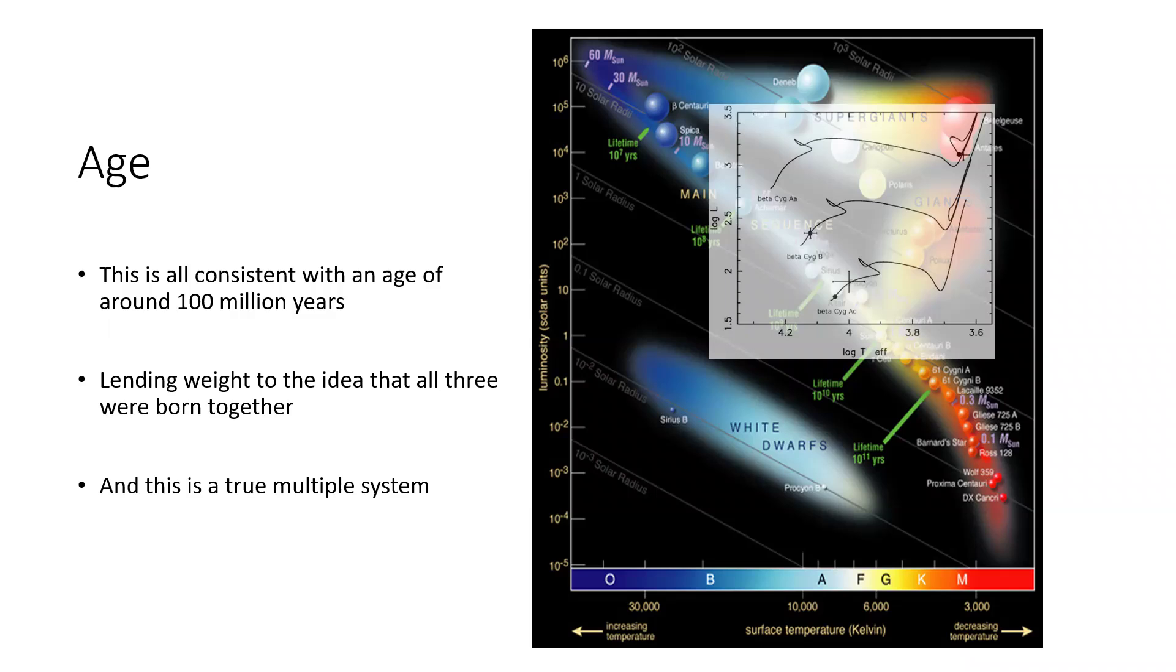So it looks like they were all born together at the same time, and that means it probably is a triple star system, or even a multiple star system if some of the others turn out to be true.